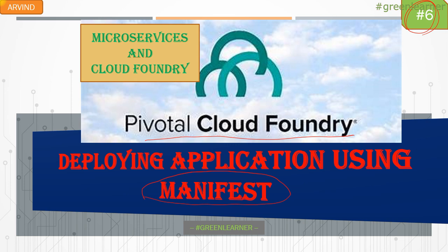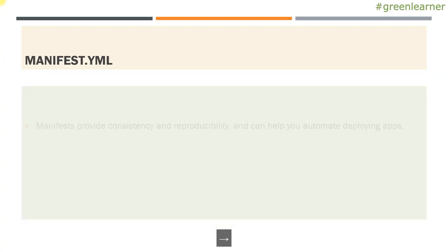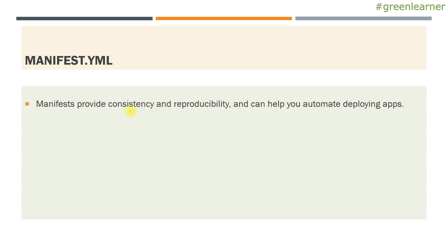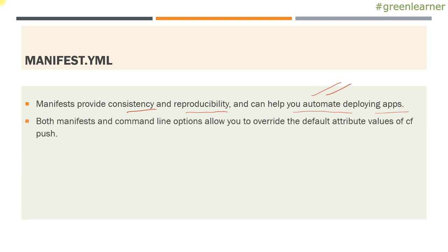Manifest is a file. It takes the syntax of YAML — Yet Another Markup Language. Manifest provides consistency and reproducibility and can help you automate deployment. Both manifest and command line options allow you to override the default attribute values of CF CLI, CF push, or CF CLI.